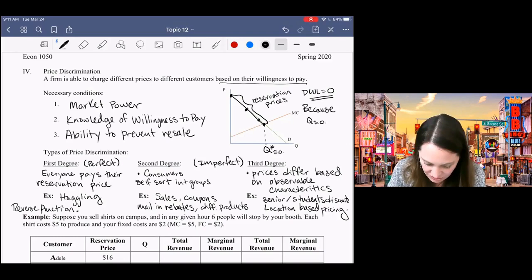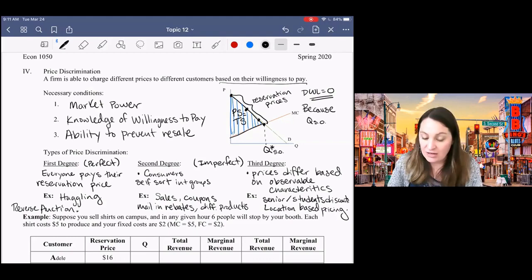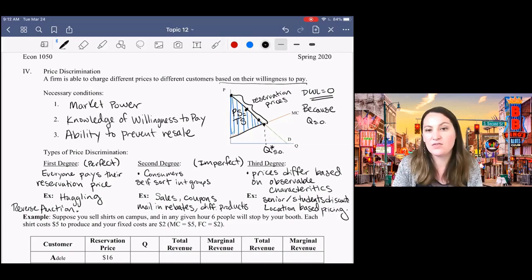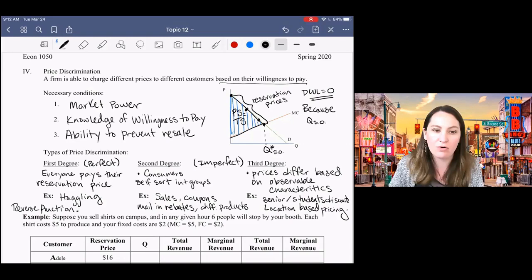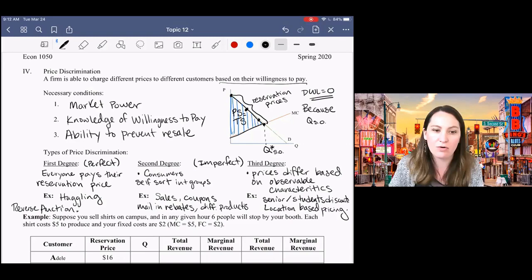What's happening to surplus here? Well, remember producer surplus is the area below the price and above the supply curve. So producer surplus is equal to total surplus. Total surplus is entirely captured by the firm. Consumers get no surplus. They're paying their reservation price. You walk into the store, you're willing to pay $10 for a t-shirt, that's how much they're going to charge you. You're willing to pay $8, that's how much they're going to charge you. So producers capture all of the surplus in the market, but there's no deadweight loss, which means that price discrimination gets us to the socially optimal affordable outcome.